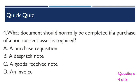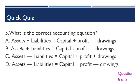Question 4: What document should normally be completed if a purchase of a non-current asset is required? A. A purchase requisition. B. A dispatch note. C. A goods received note. D. An invoice.